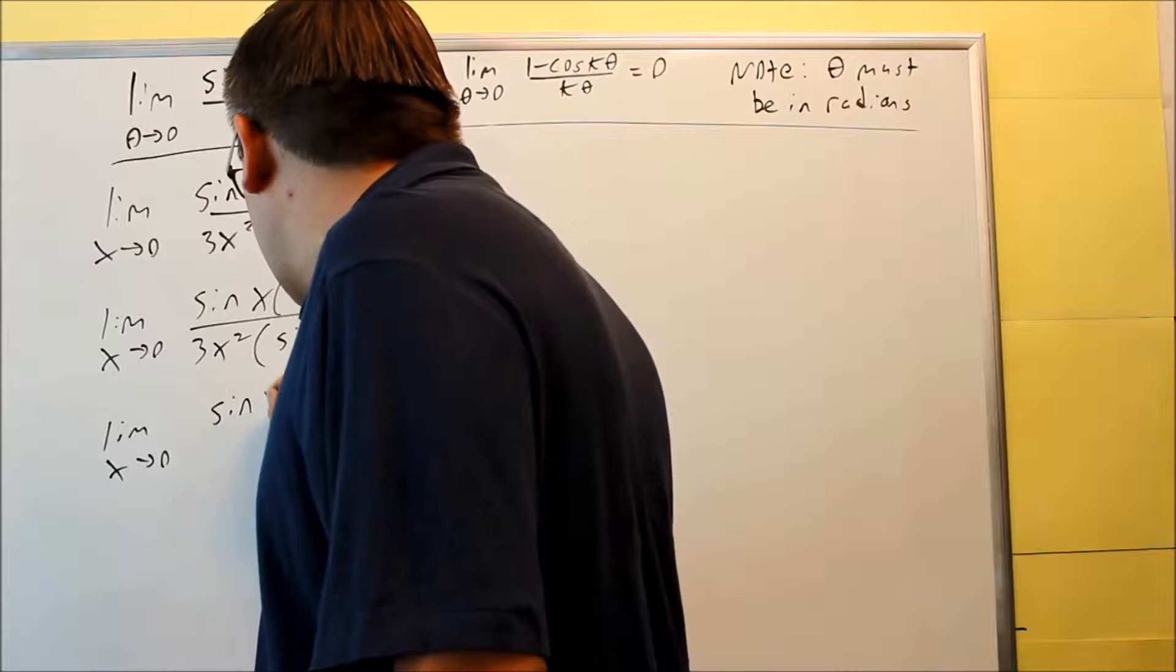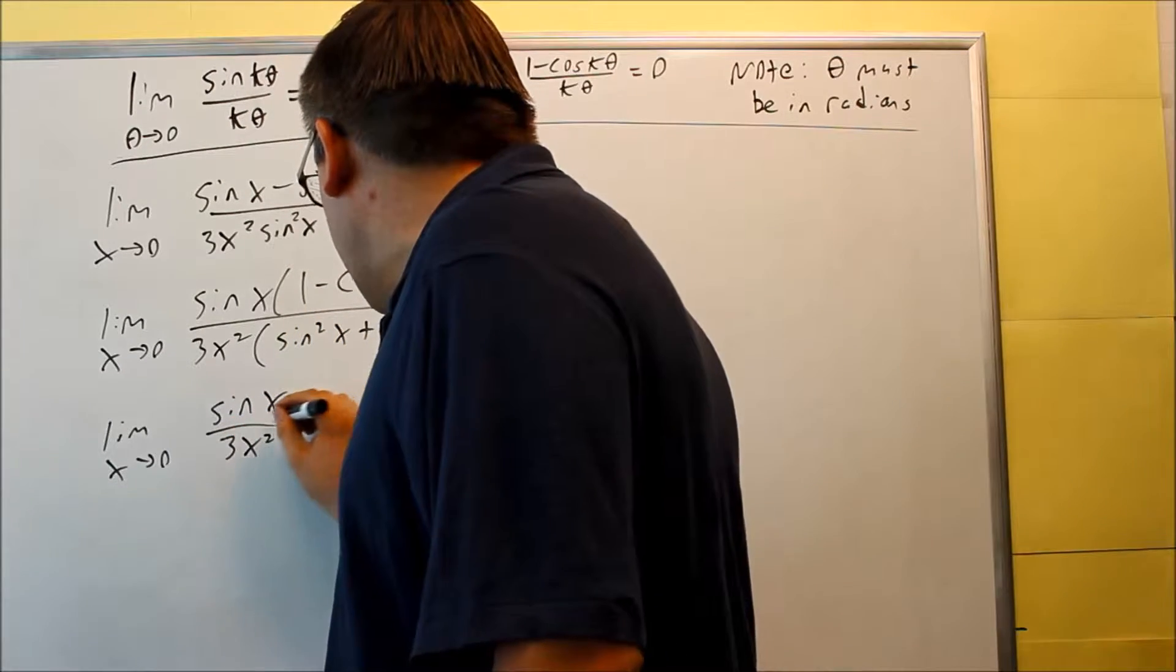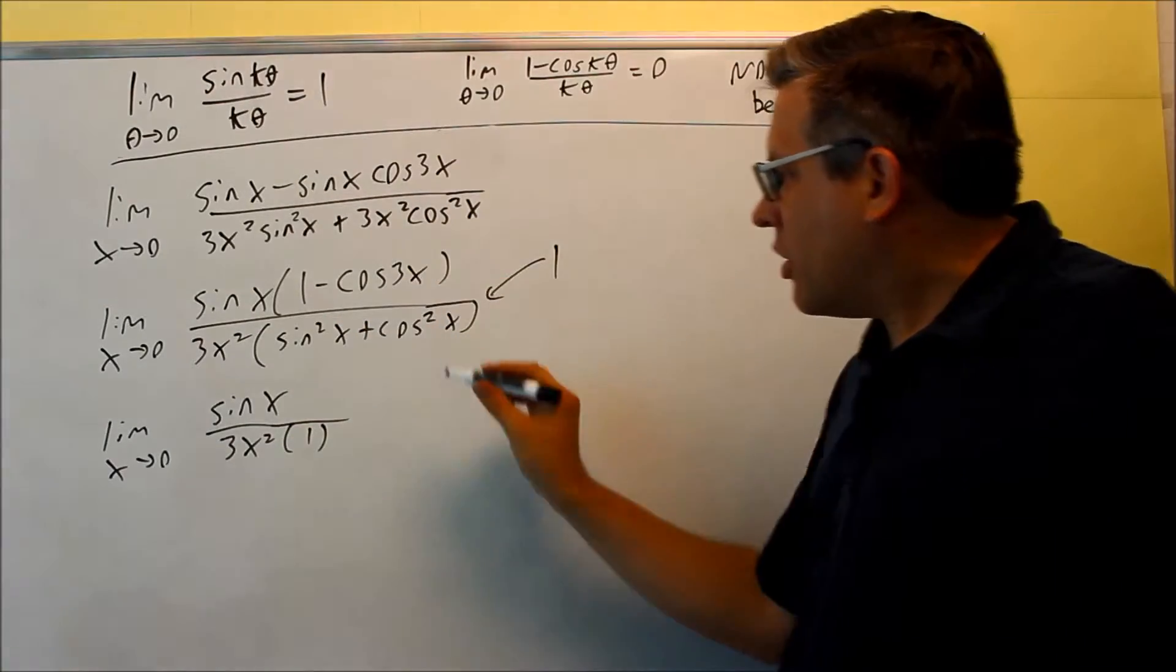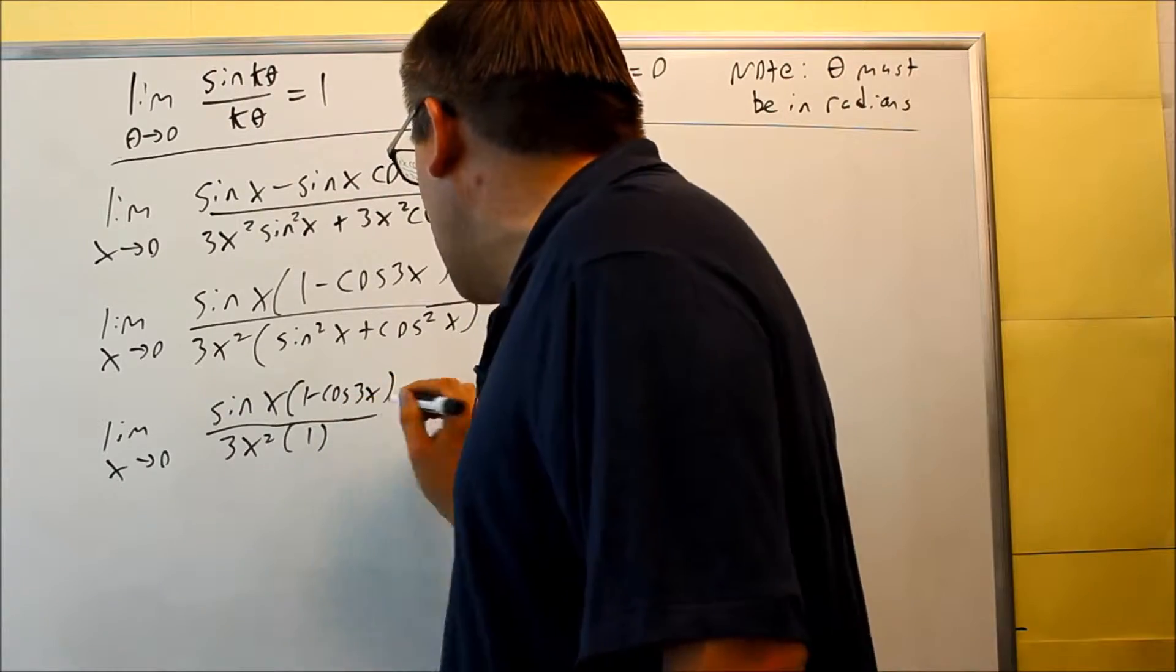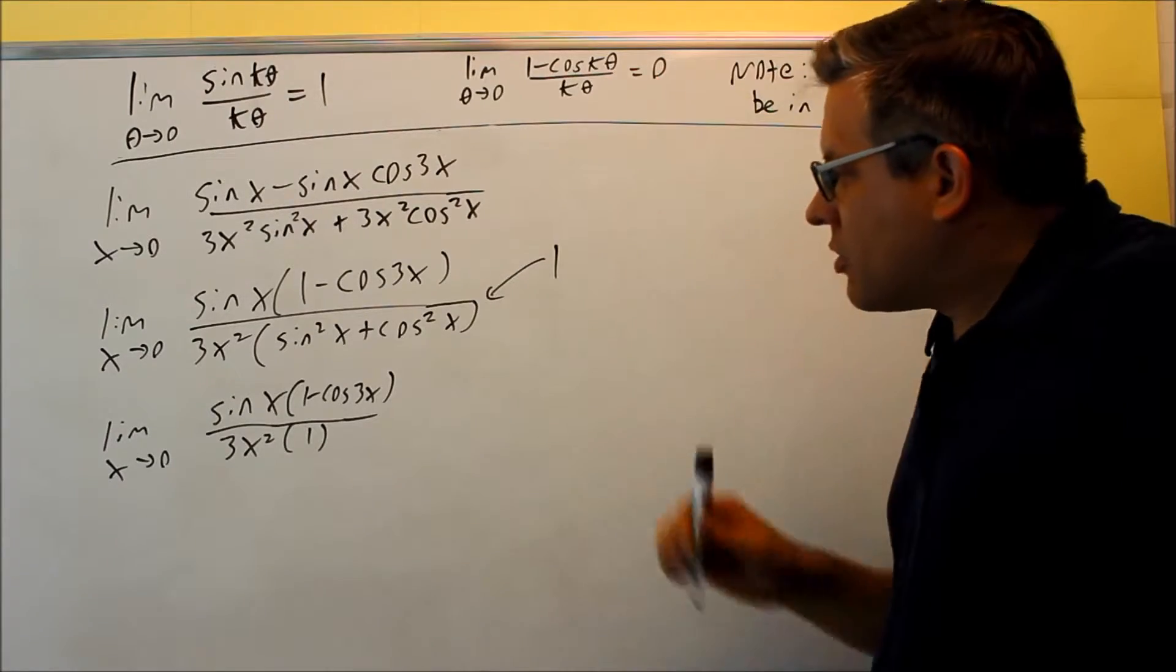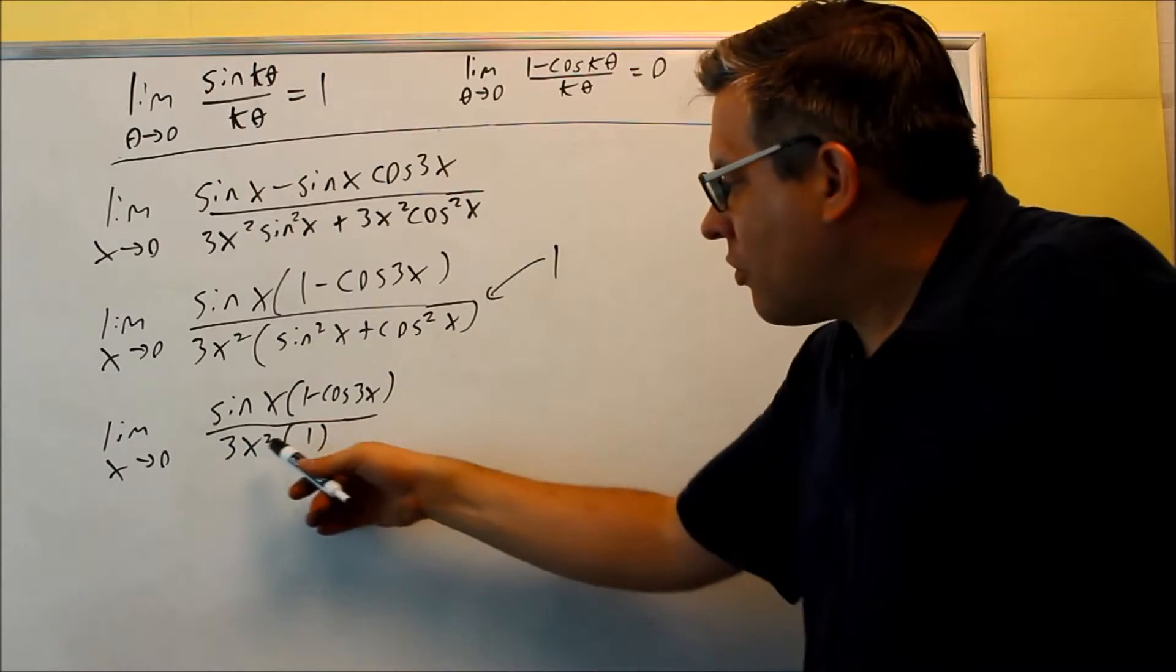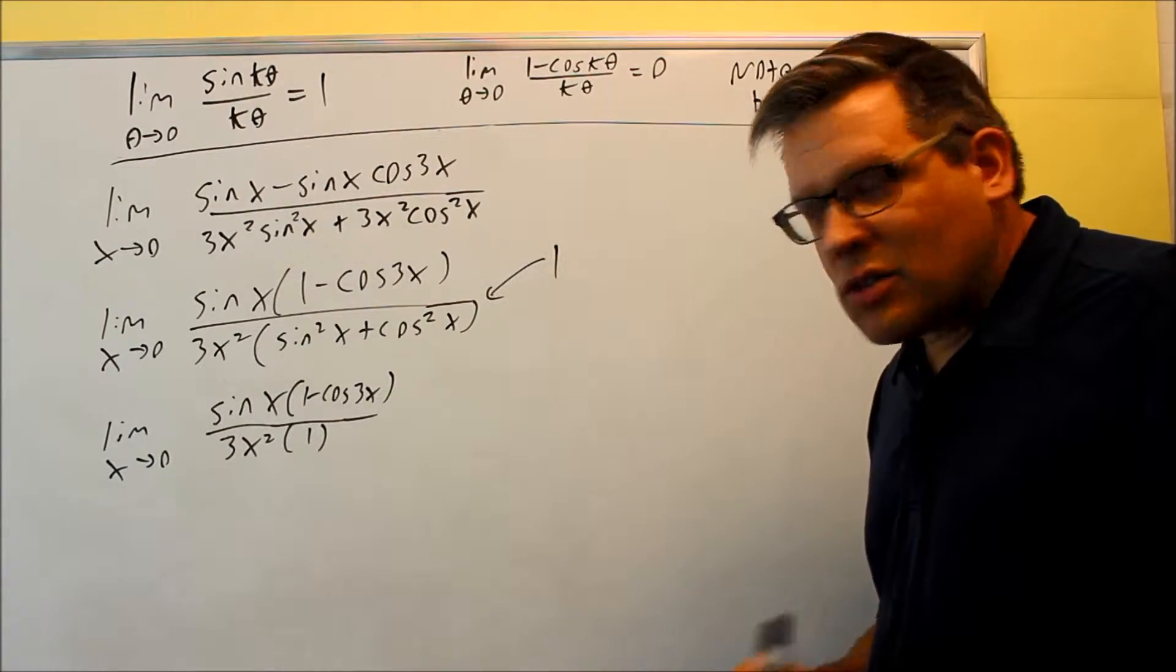So here's what we're left with once we cancel that part out. You're going to be left with sine x over 3x squared and then this will be a 1, and then you have 1 minus cosine 3x on top. Now what I'm going to do next is in order to form each of these special limits, I'm going to break up the 3x squared. Now 3x squared I can write as x times 3x.